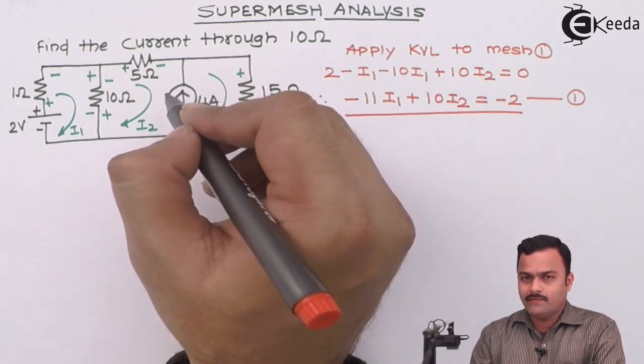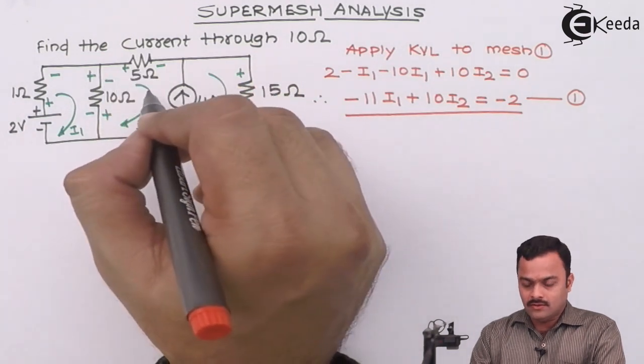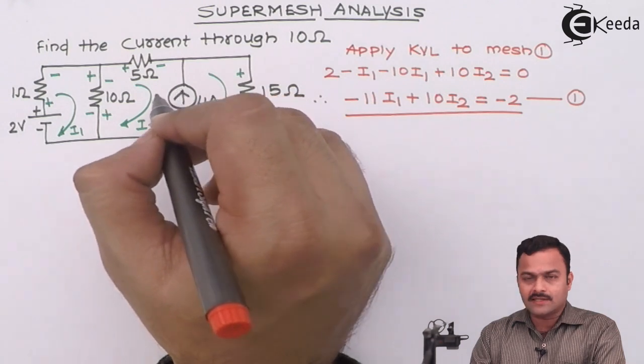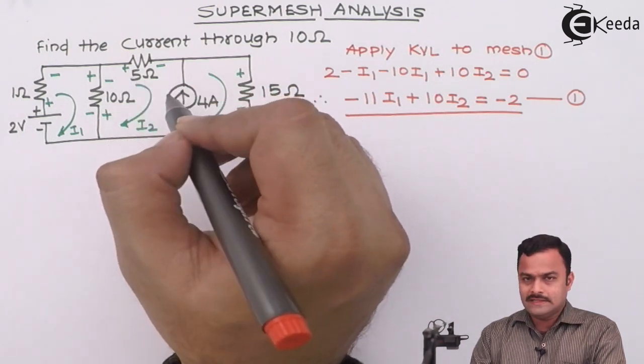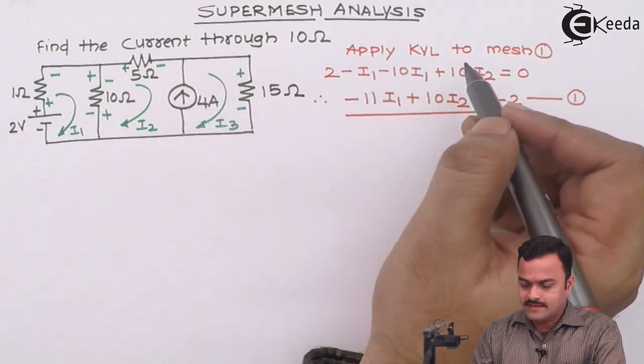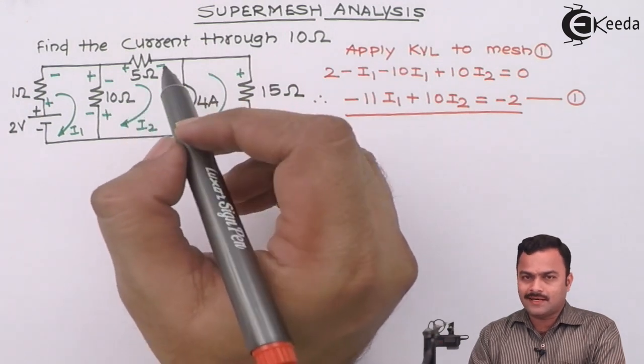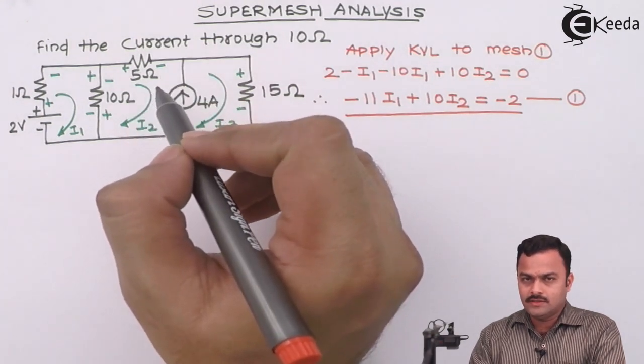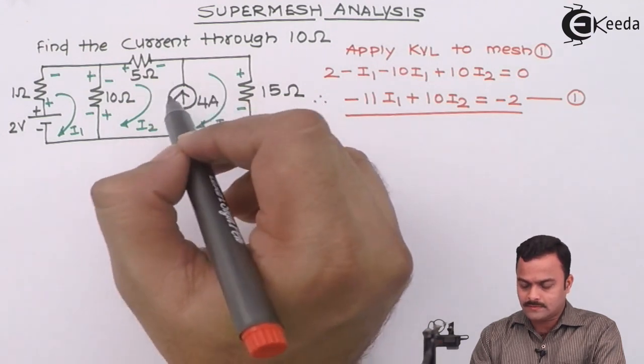So the problem is that, whenever we will have a current source, part of a circuit, which is nothing but a common part between two meshes, at that time we step as far as the traditional mesh analysis is concerned. So here we need to apply a technique called as super mesh. So let's see how we are going to apply super mesh technique to this problem.